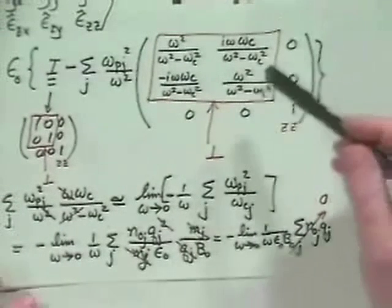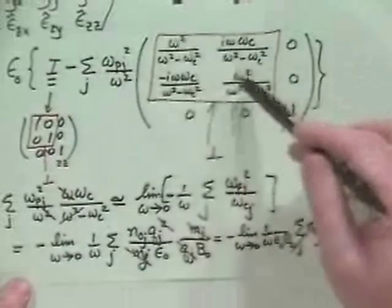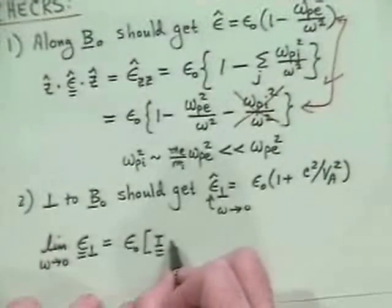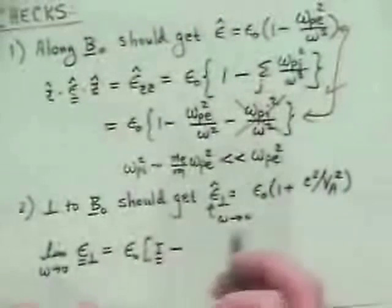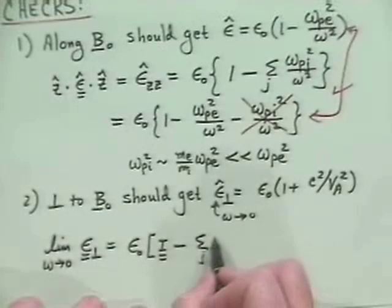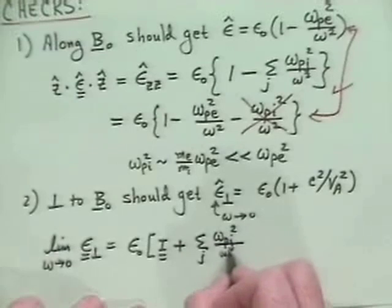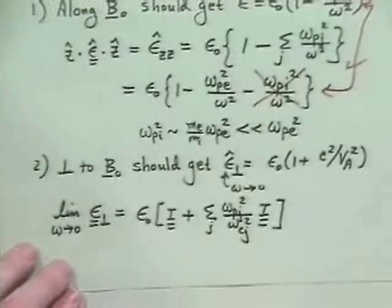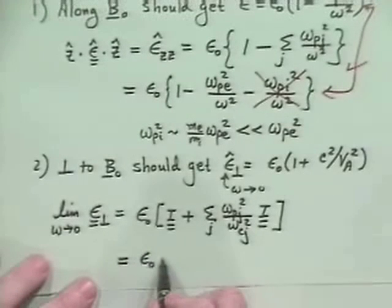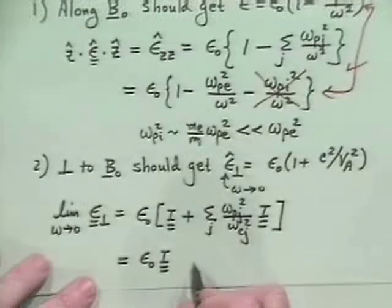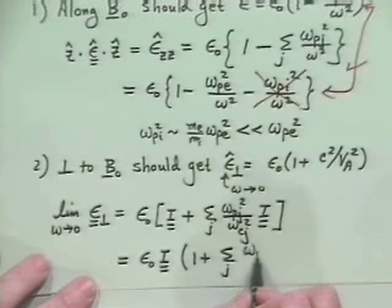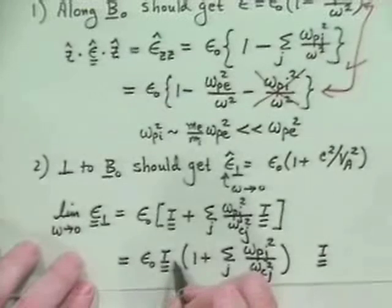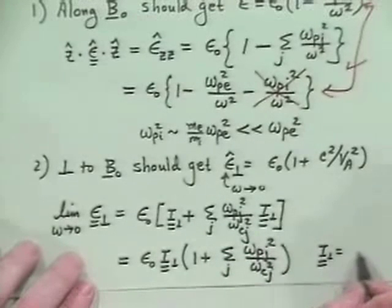So when I take the frequency omega goes to 0, these off-diagonal terms don't contribute, and you get only the diagonals. The omega squareds cancel and you get omega pj squared just over omega cj squared. So we get minus the sum over j of omega pj squared over omega cj squared times the identity tensor — plus, accounting for the overall sign, epsilon 0 times the identity tensor times 1 plus the sum over species of omega pj squared over omega cj squared, where i_perp is just the 2x2 identity.